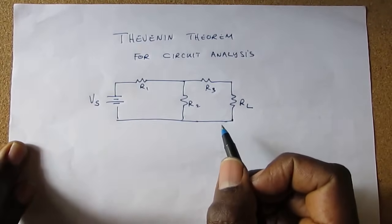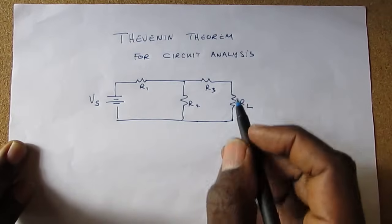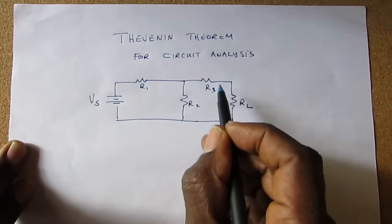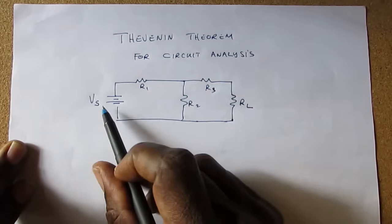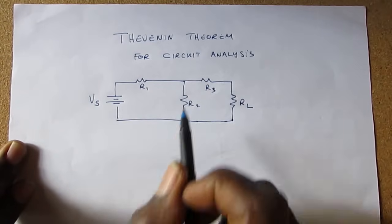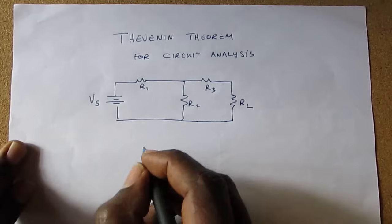The aim of the Thevenin theorem is to reduce this complex circuit to a single voltage supply and a series resistor, which would look like this.